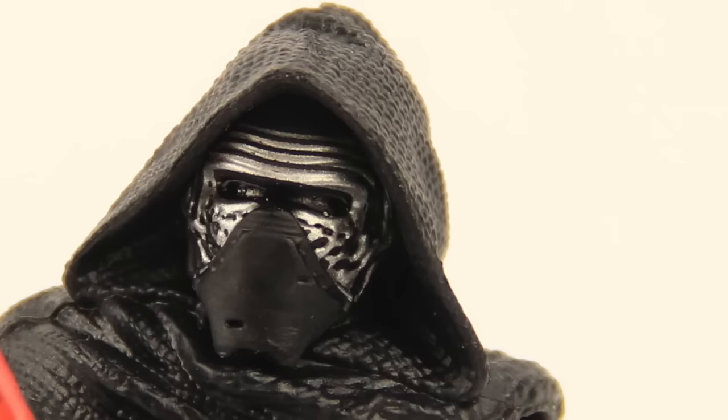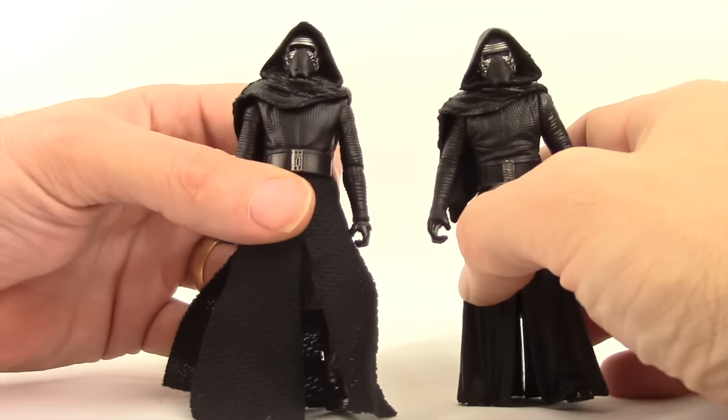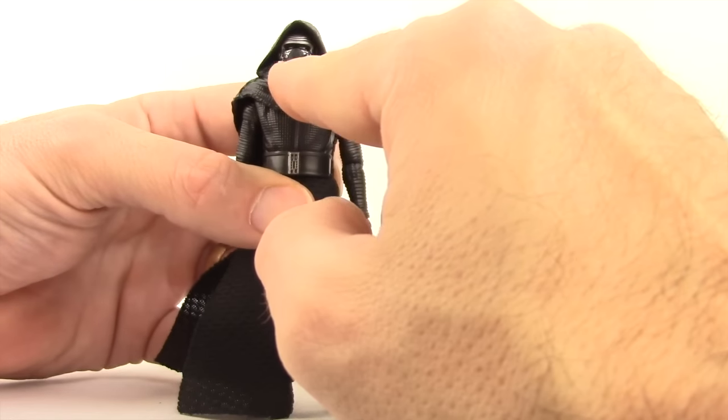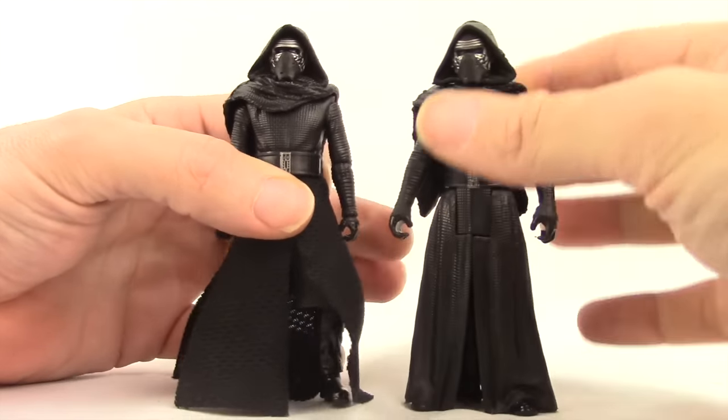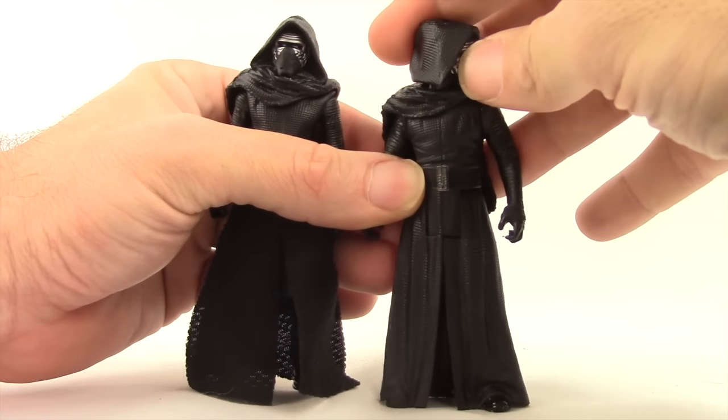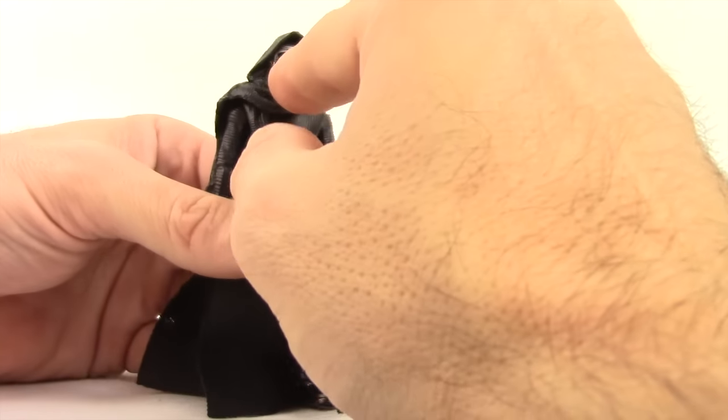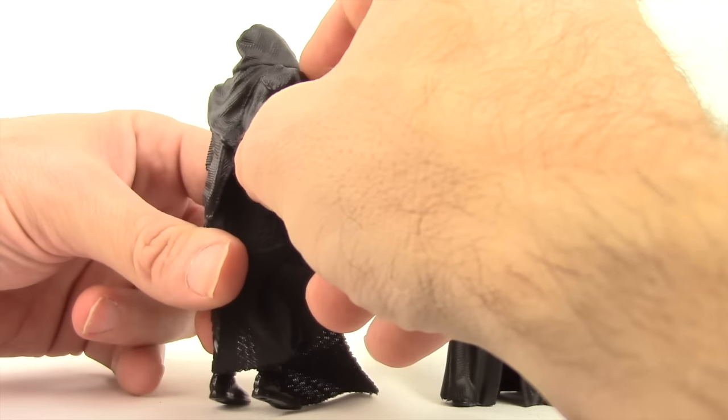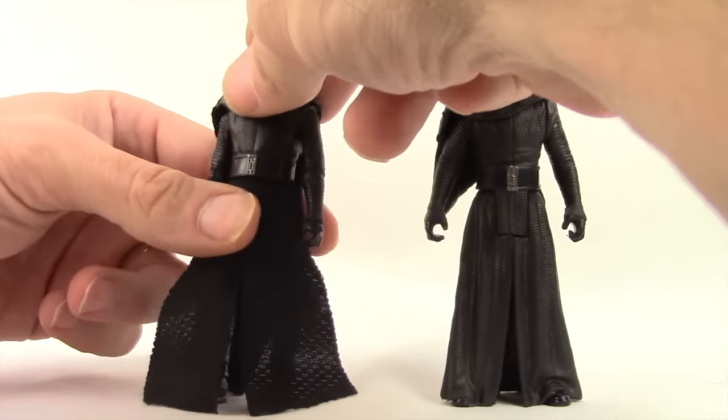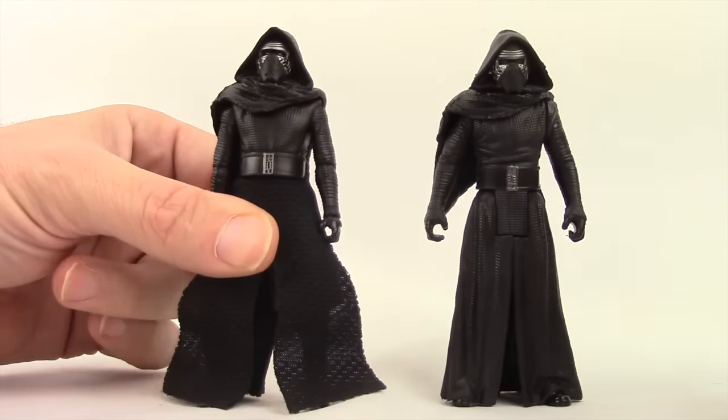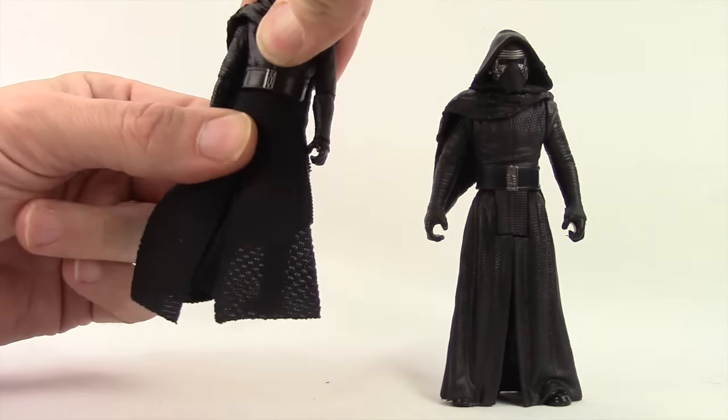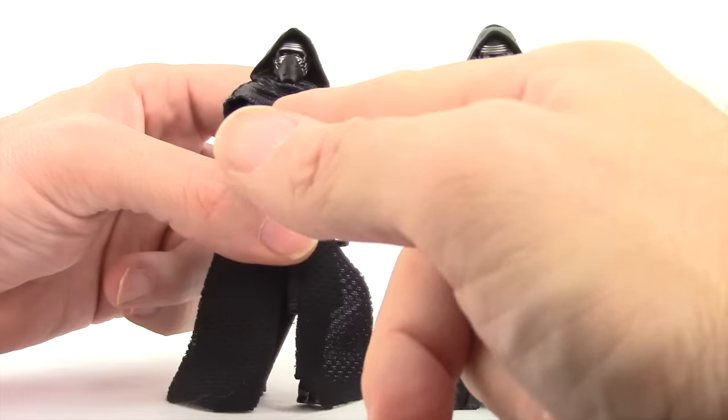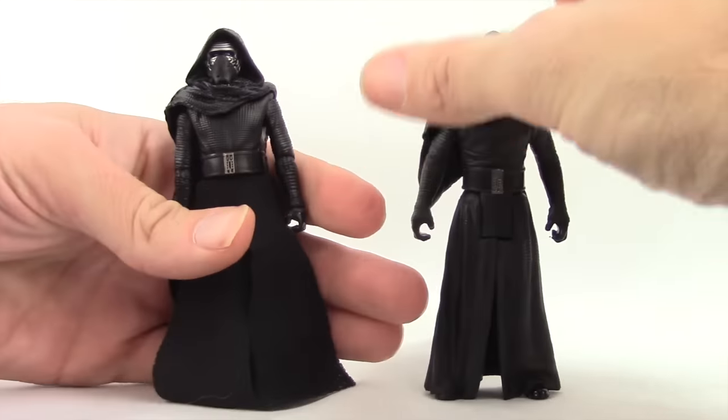Now the strange thing about this is, this Black Series version does have more articulation than this five points of articulated regular figure. However with the head, we actually don't get more movement. We actually have more movement with the head on this five points of articulated figure. You can actually turn the head, whereas on this one you can't. They basically made the head sculpt attached to this cloak piece that goes down his back, and it's a hard plastic. So this is all one piece on this figure. You really can't turn the head at all. This figure does have a waist joint so you can turn at the waist. I just want to point this out, that this one you can actually turn the head and this one you can't.